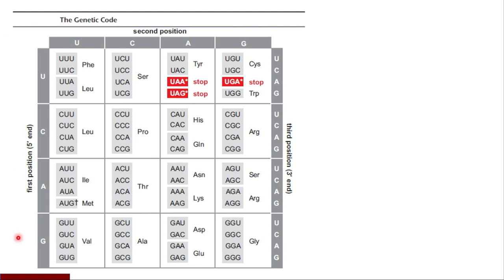This is a genetic code. Each triplet is a codon, and this codon is going to translate or code for a given amino acid — like UUU codes for phenylalanine. There are three stop codons: UAA, UAG, and UGA. These are stop codons, also called nonsense codons or termination codons.